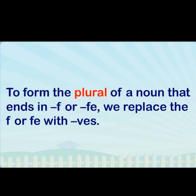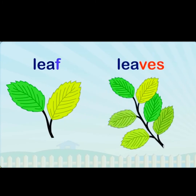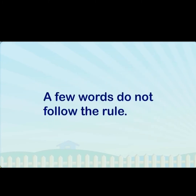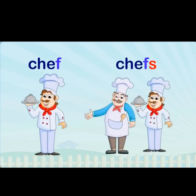For nouns that end in f or fe, we replace the f or fe with -ves. For example: leaf → leaves — see, I have put -ves here. However, a few words do not follow this rule. For example: chef → chefs; here -ves does not apply.